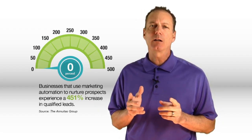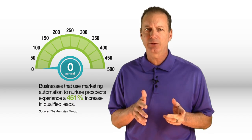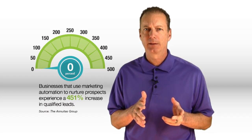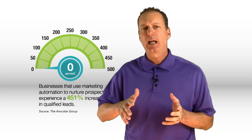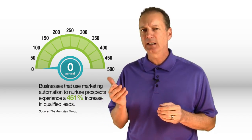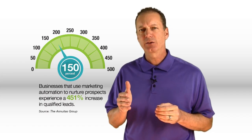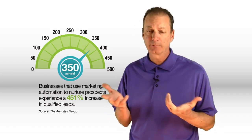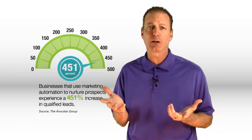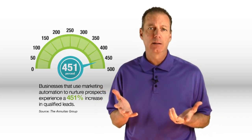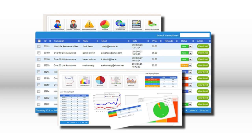Marketing Automation Software connects to your CRM, and as your prospects start to interact with your digital marketing, the software will track that behavior. For instance, if they click on a blog, download a white paper, or download a case study, any action that they take is going to get a lead score.